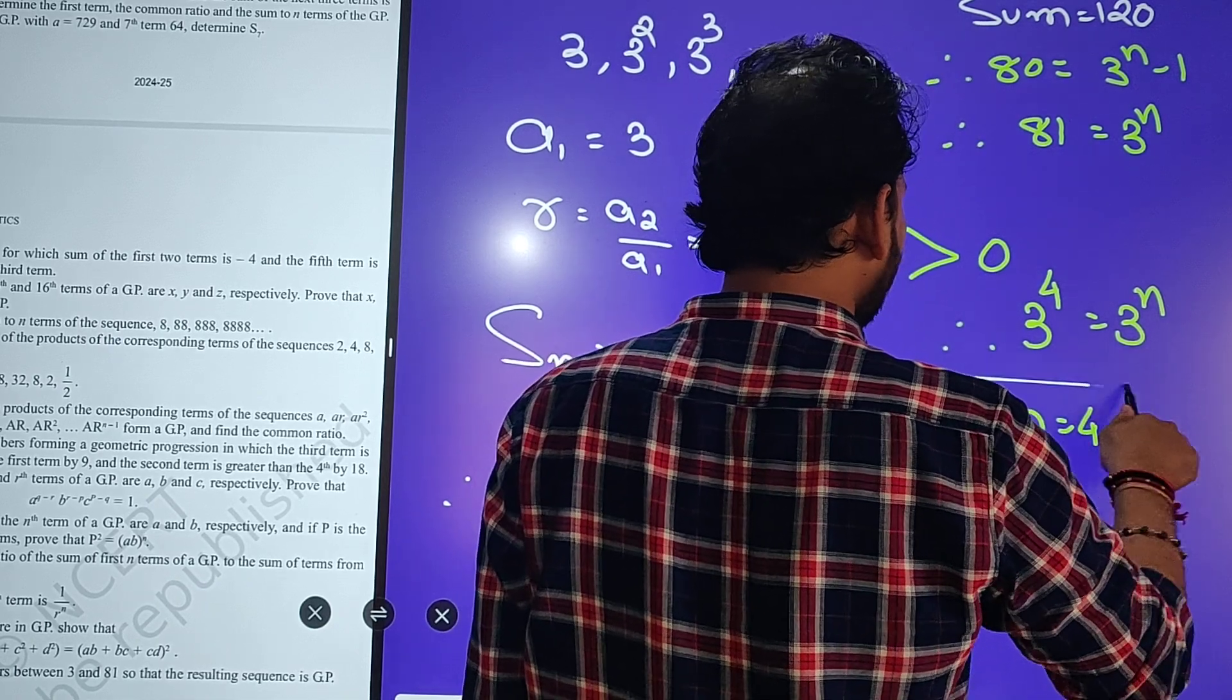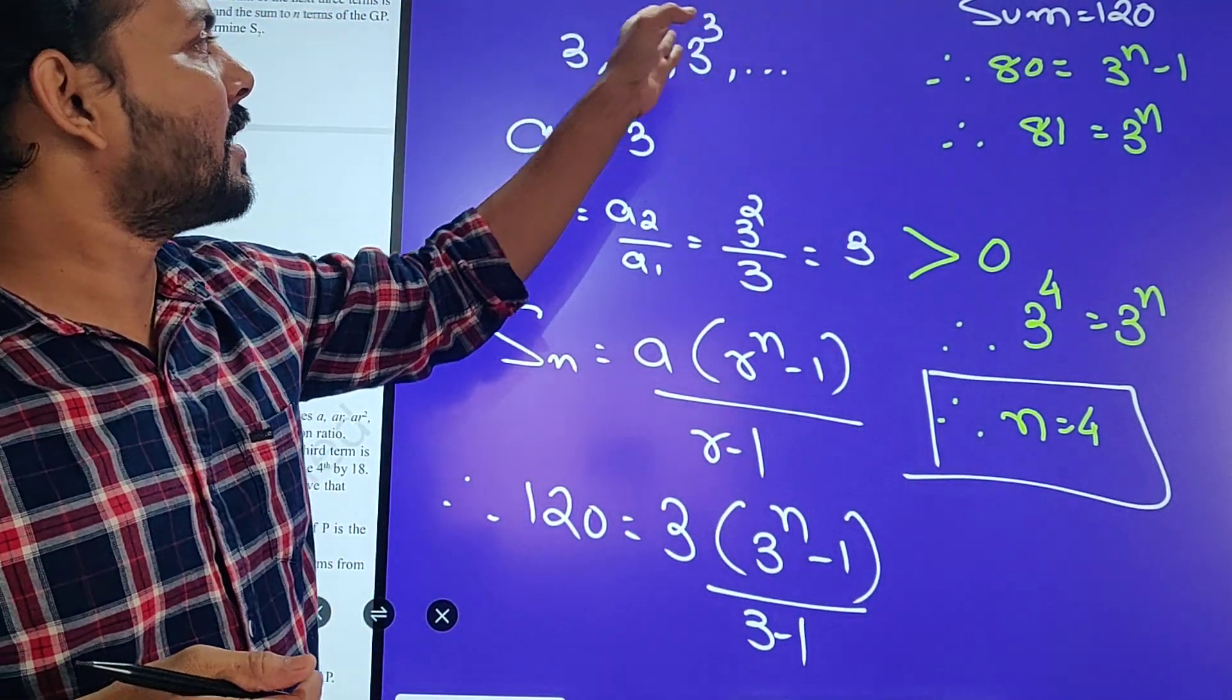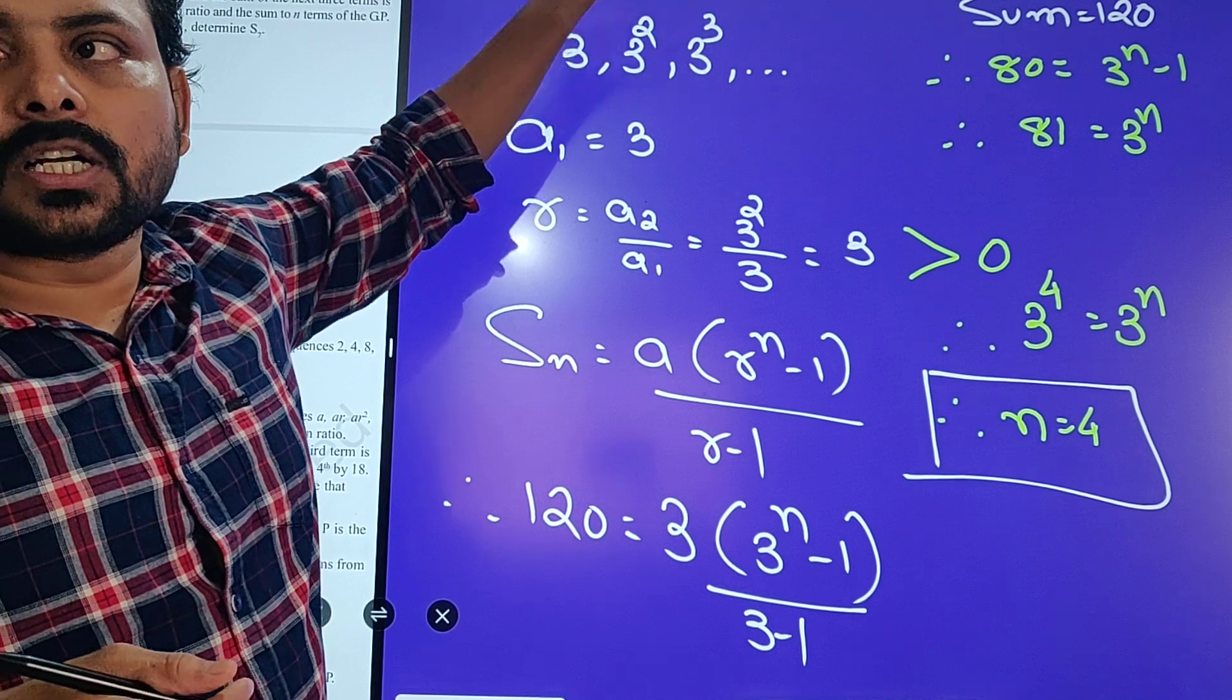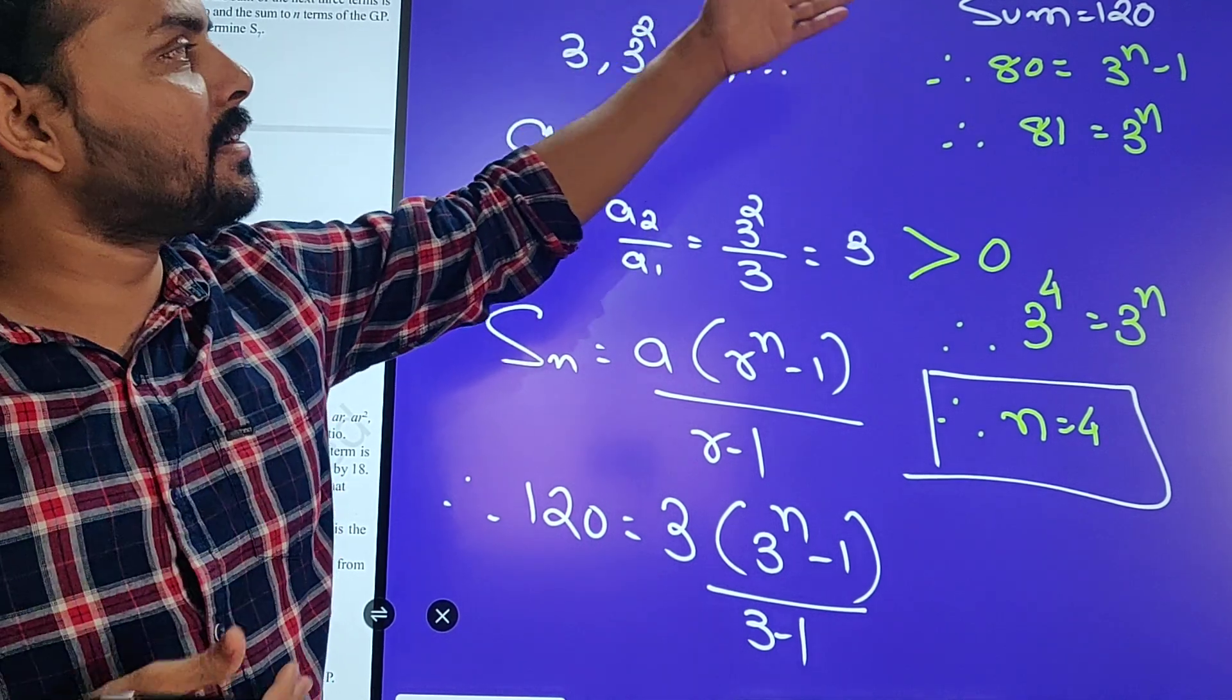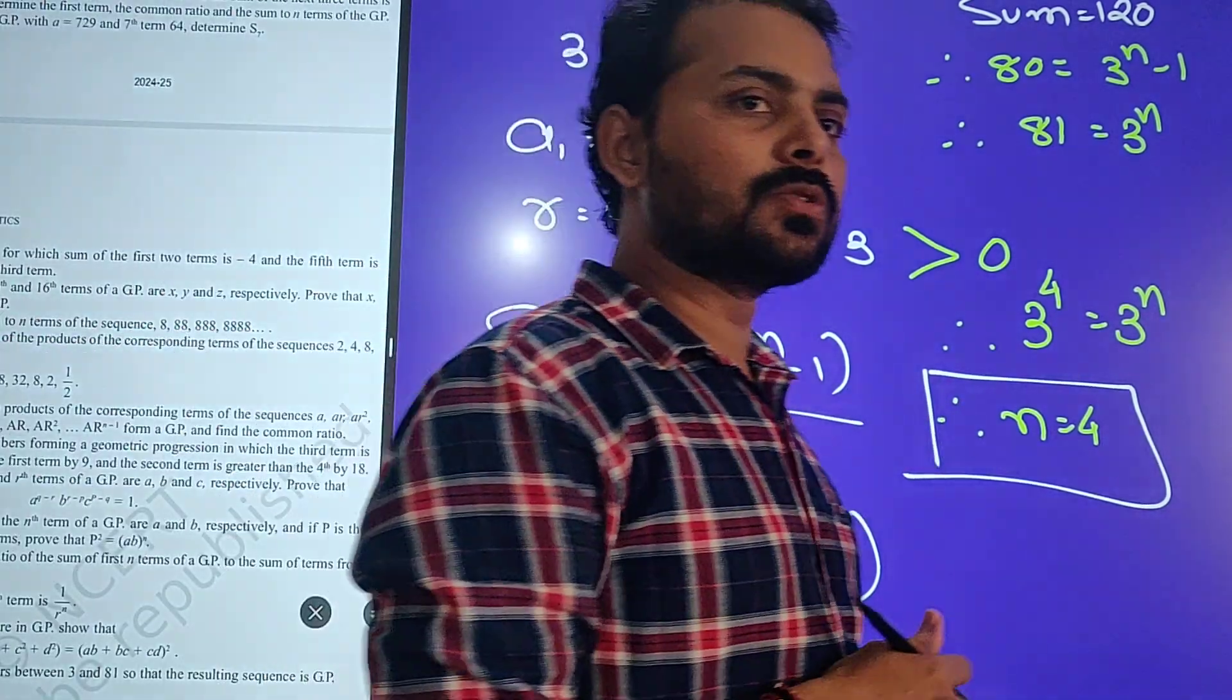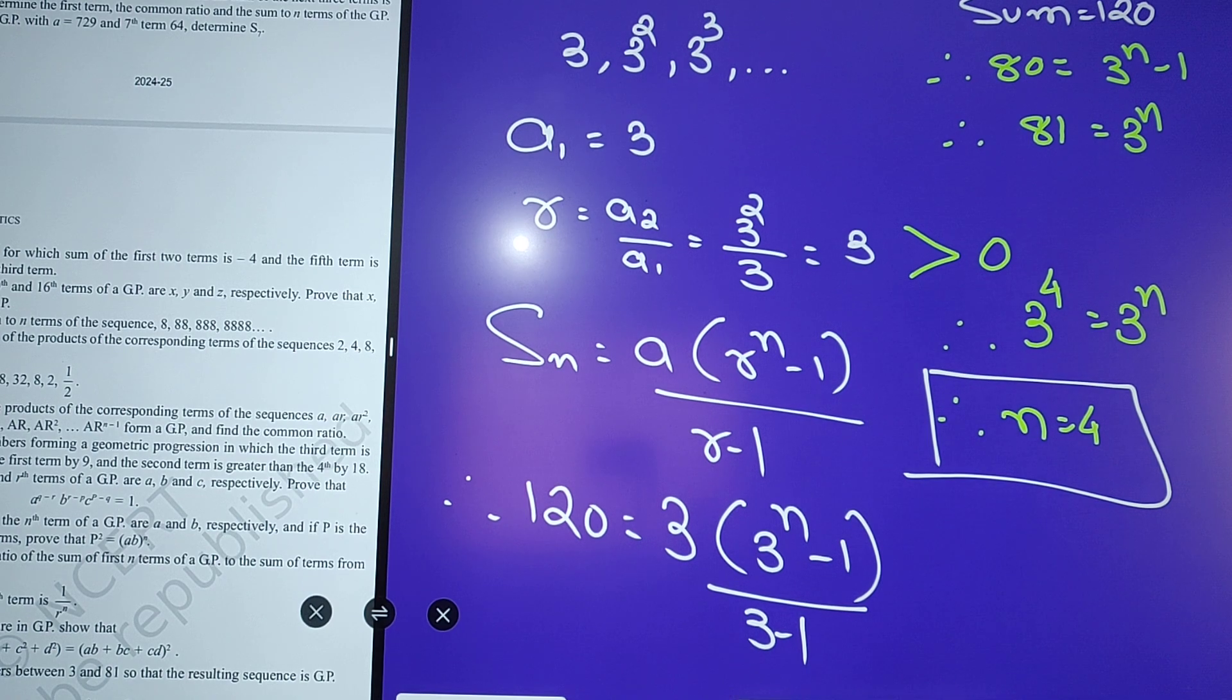Agar 4 terms lenge, toh iska sum 120 ho jayega. Toh abhi toh hum na kiya toh tha. Yeh 27 hai. 27, 36, 39. Yeh toh 39 toh ho hi gaya. 39 plus 3 raise to 4, matlab 81 kelenghe, toh 39 in 81 kitna ho jayega? 120 ho jayega. Toh itni terms add kagne thi, that is n is equals to 4. Done. Okay. So that's it. Chota numerical tha. Okay.